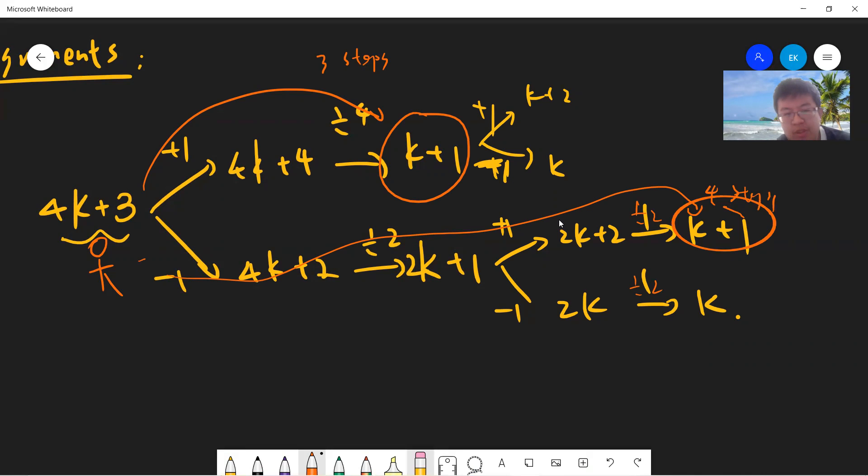Then you get your final beautiful answer, then it seems like that add 1 is the better way, because if you want to arrive k plus 1, then you only need three steps and arrive k plus 1. So it seems like that these directions should be better, because only takes three steps.